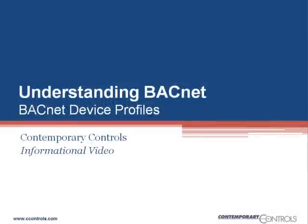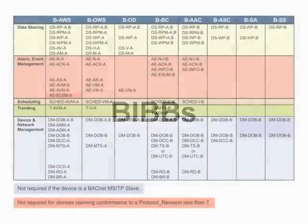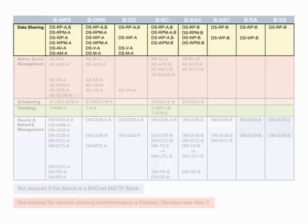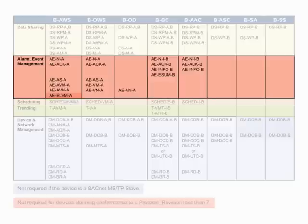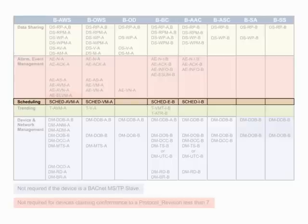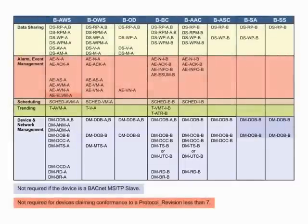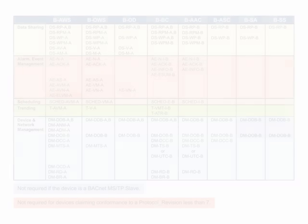In a previous video, we introduced the concept of BACnet Interoperable Building Blocks, or BIBs. The five categories of BIBs are data sharing, alarm and event management, scheduling, trending, and device and network management. From BIBs, BACnet device profiles are created.